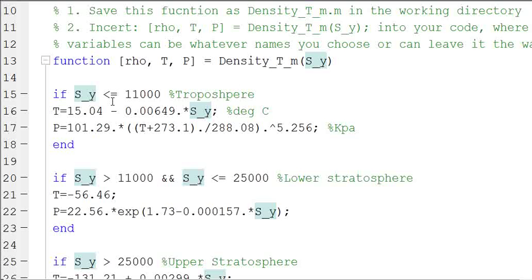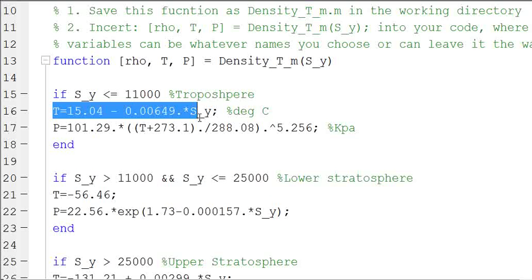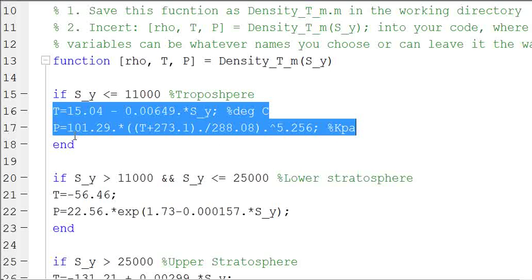So I have, if S_y is less than or equal to 11,000, we know we're in the troposphere and then we can calculate the temperature and pressure using these two equations. So if, do something, end.